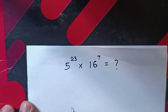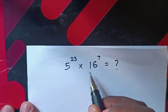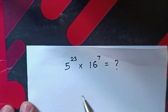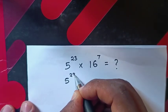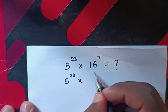Hello, how to solve 5 to the power of 23 times 16 to the power of 7. Starting with 5^23 times 16.